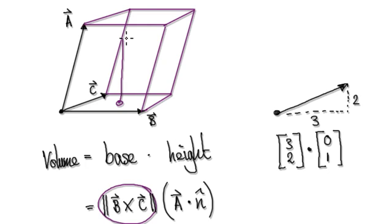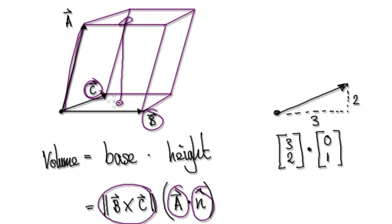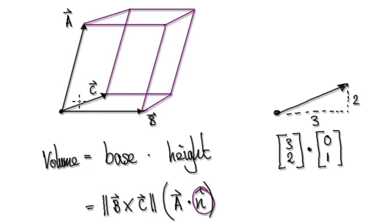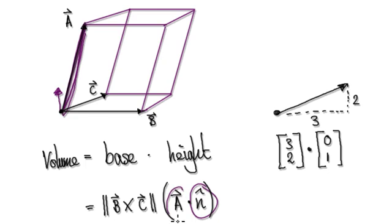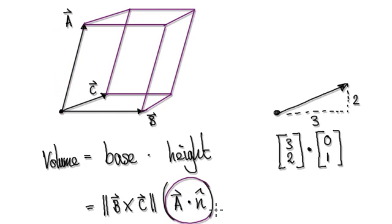And then we would times the vertical height. The vertical height would be you getting vector a, and then dotting it with the unit vector n-hat, which is a unit vector perpendicular to b and c — perpendicular to the plane. So if you get the actual vector a and dot it with the unit normal vector, it gives you this vertical height. I'll elaborate more on this in the next video.